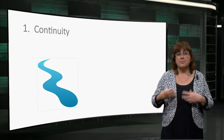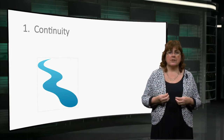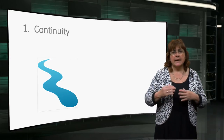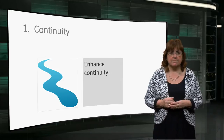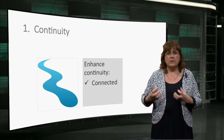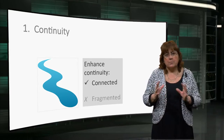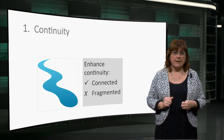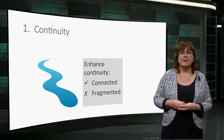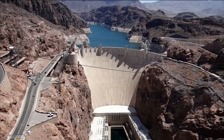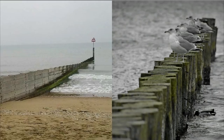First, the principle of continuity. This relates to the continuity of water and sediment flows and land-water interfaces in the ecosystem. An ecosystem should be well connected rather than fragmented. For instance, dams can interrupt the continuum of a river and alter the quantity of water and sediments available in the downstream river. Or coastal defences such as closed groins can interrupt the longshore transport of sediment, whereas an open groin system allows transport of sediment through the groin to a certain extent.